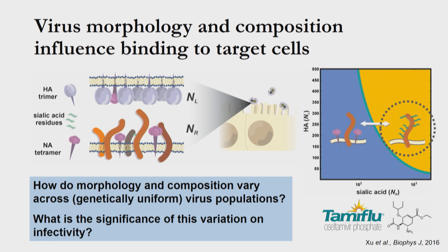Given that morphology and composition give a virus so much flexibility to modulate its ability to bind to cells, we wanted to understand how the heterogeneity I mentioned is influencing these parameters. So how much variation is there in a population of genetically uniform viruses? And building on this, we'd also like to understand what the significance of this variation might be for virus infectivity.